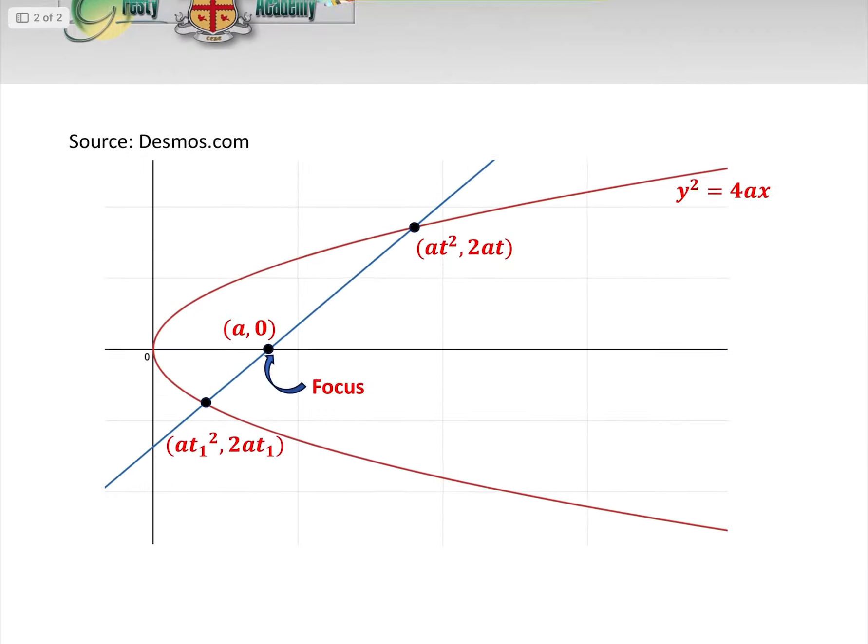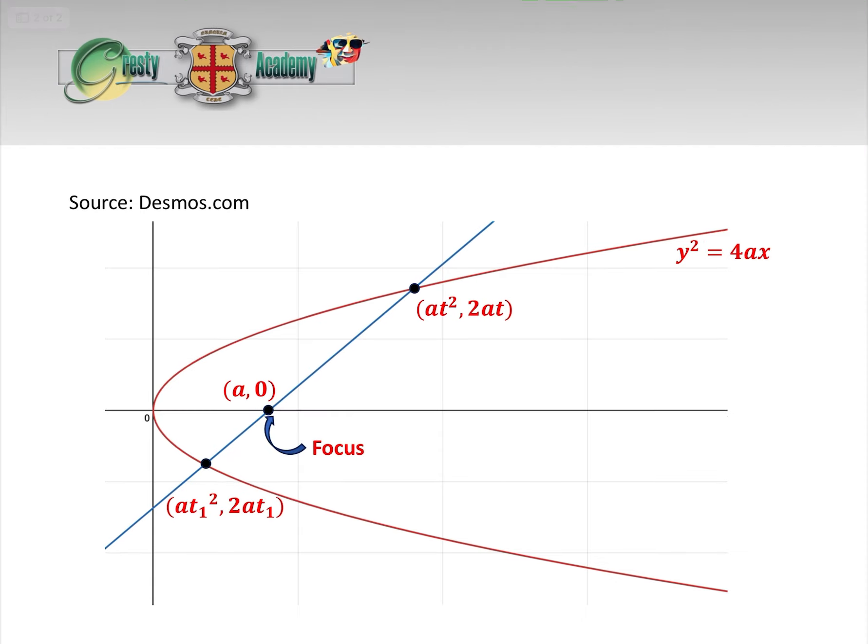So let's just go to a more general parabola here. We've got the general parabola y squared equals 4ax. We have the general parametric points on the parabola at squared and 2at.